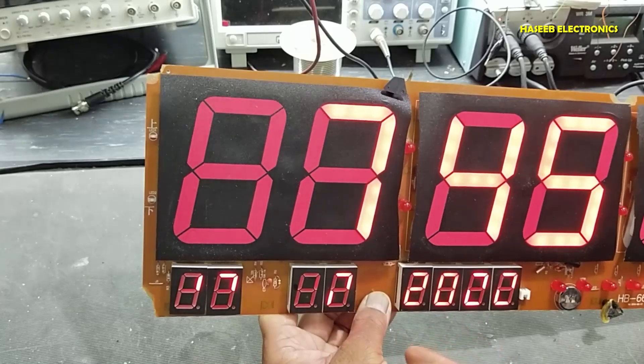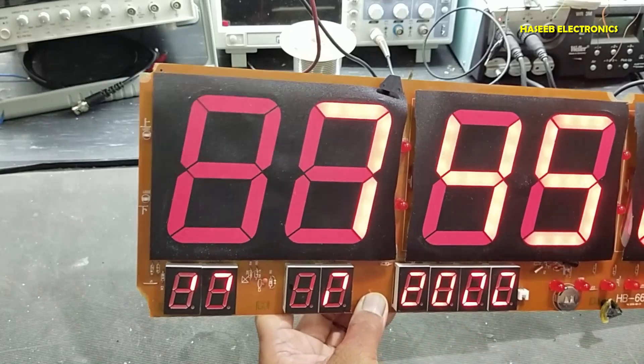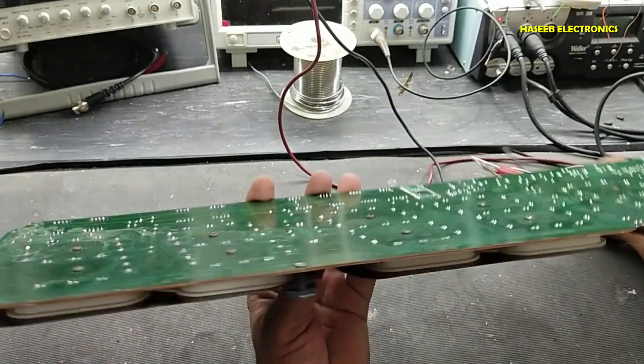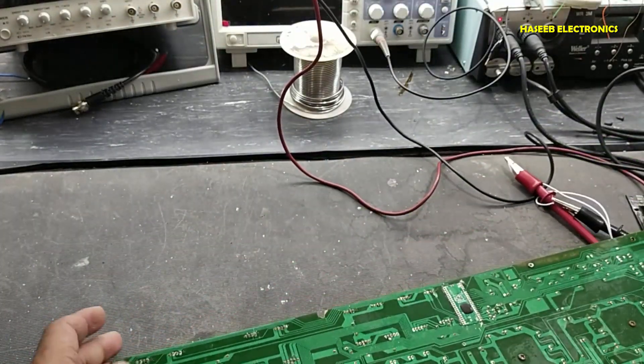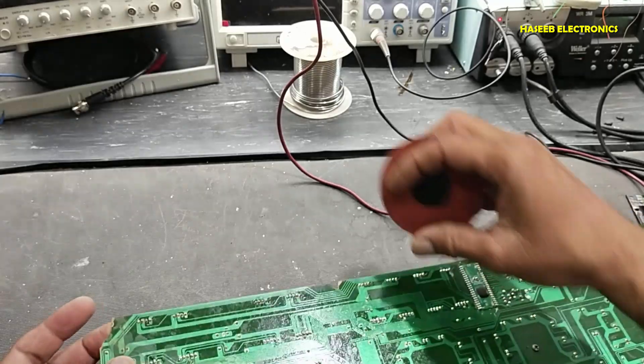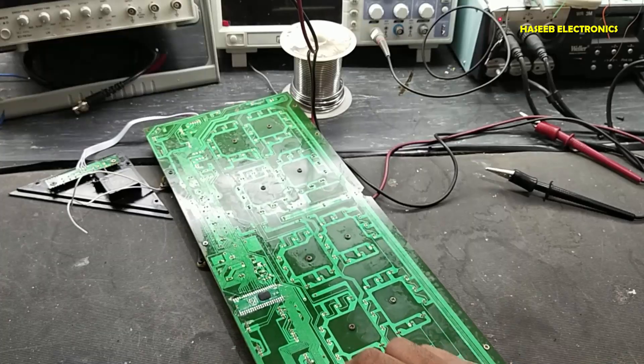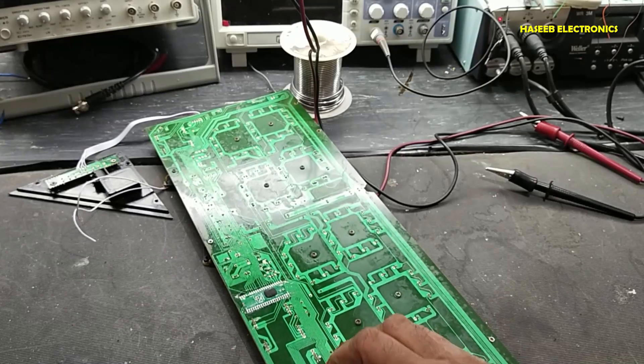So let's repair these tracks, and then we will check it again. To repair these tracks we can make jumpers and we can use piggyback technique.